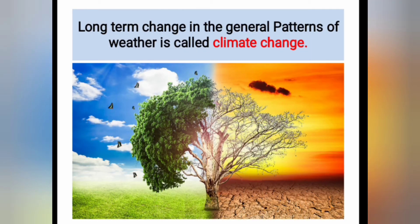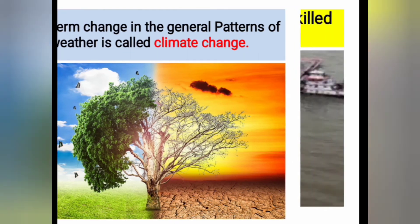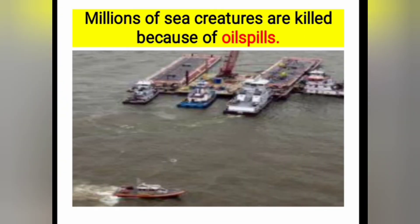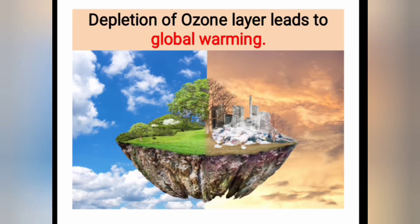See the first one. Long term change in the general patterns of the weather is called climate change. Millions of sea creatures are killed because of oil spills. Depletion of ozone layer leads to global warming.